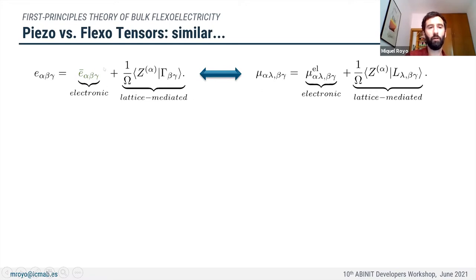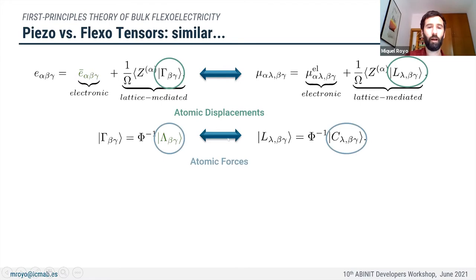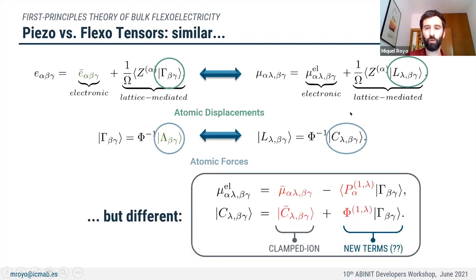With these ingredients, we can write down two similar equations for both the piezoelectric tensor and the flexoelectric tensor. In both cases, the response splits into an electronic and a lattice-mediated part, where the lattice-mediated part is written as the product of the Born effective charges times the piezoelectric or flexoelectric internal strain tensors. These internal strain tensors describing the atomic displacements are obtained from the force response tensors multiplied by the pseudo-inverse of the force constant matrix. For piezoelectricity, this decomposition suffices. However, the analogy with flexoelectricity stops here because in the flexoelectric case, both the electronic and force response tensors can be further decomposed into a clamped-ion part and a new contribution written in terms of the piezoelectric internal strain tensors.